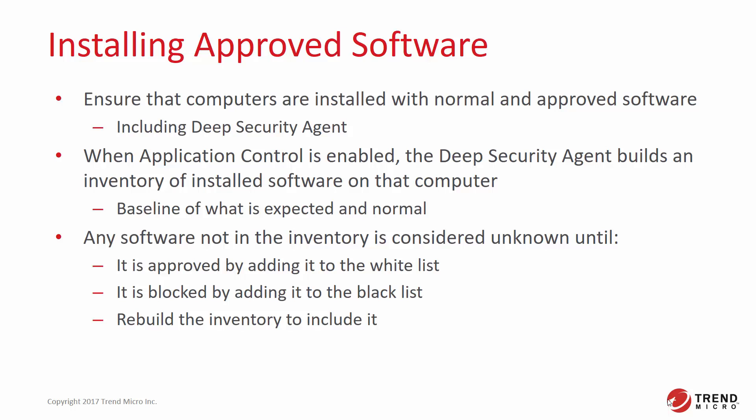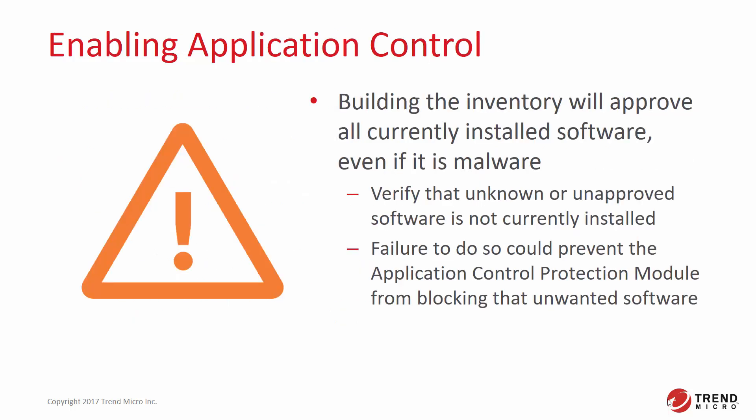Any software that is not in the inventory is considered unknown or unrecognized until you either approve it — which adds the software to the whitelist — block it — which adds the software to the blacklist — or rebuild the inventory to include the software. Building the inventory will approve all currently installed software, even if it is malware. Before building the inventory, verify that unknown or unapproved software is not currently installed. Failure to do so could prevent Application Control from blocking that unwanted software.